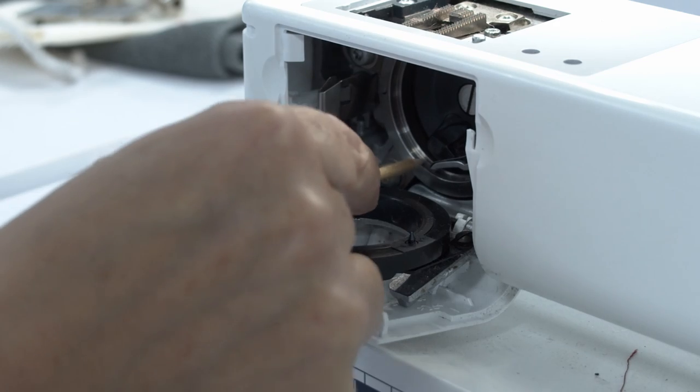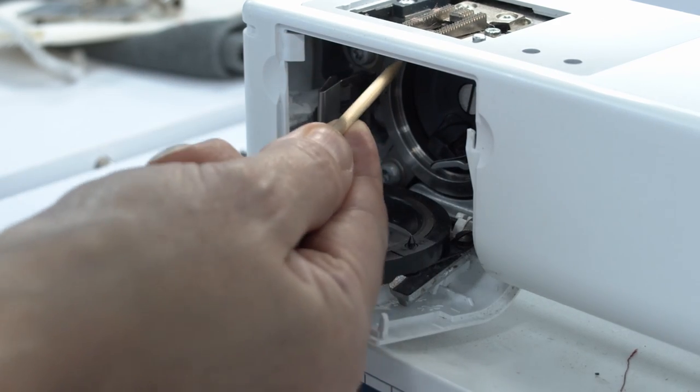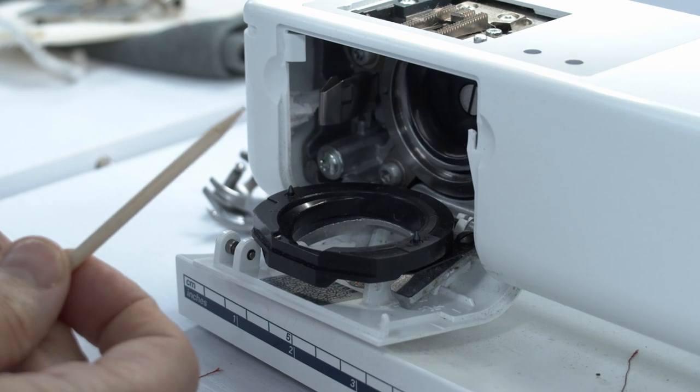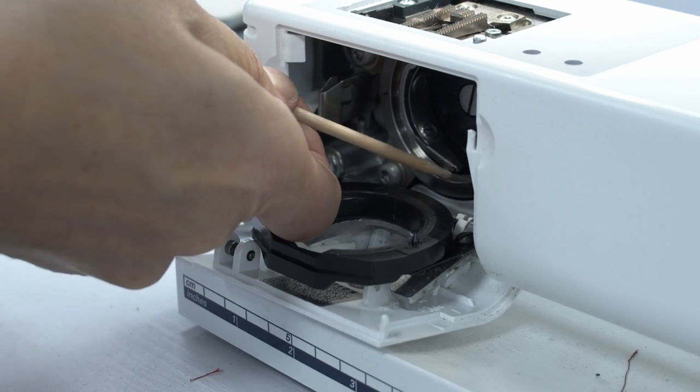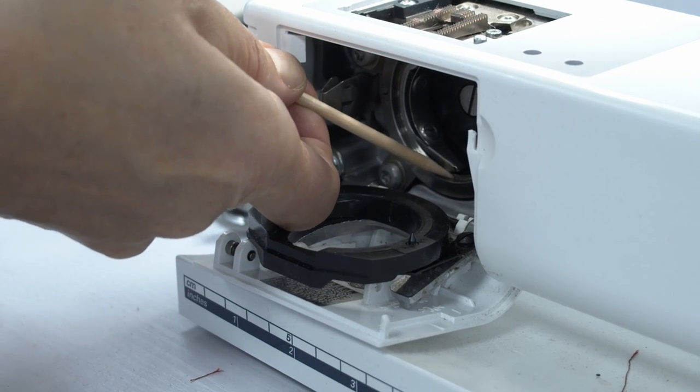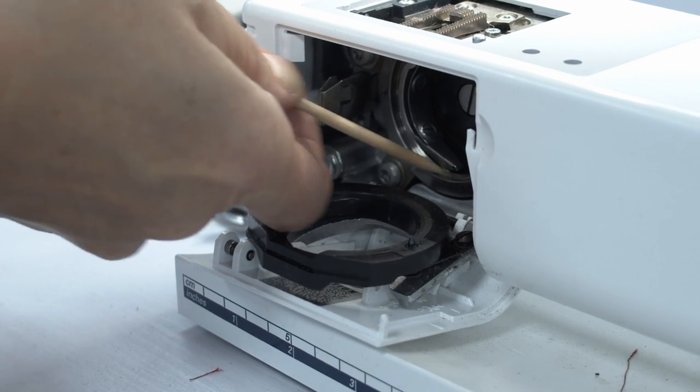I'm just going to, on these CB machines, take it around and just check there's nothing in the way. Now, here it is. Can you see that? I wonder what we're going to find in here.